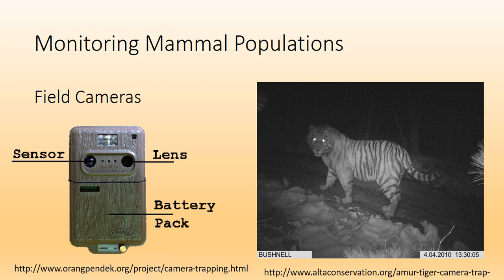Another method, especially for mammals, is camera traps. Some of you have camera traps to look at what's in your backyard. They're especially useful for elusive and nocturnal species. When I helped with a black rhino study in South Africa, we used camera traps to identify individuals — they usually came to the area around 3–5 a.m., not times you'd want to be out at night there. We were also collecting their feces to look at hormone levels and parasite levels, and could identify which individual it was from the camera trap footage.